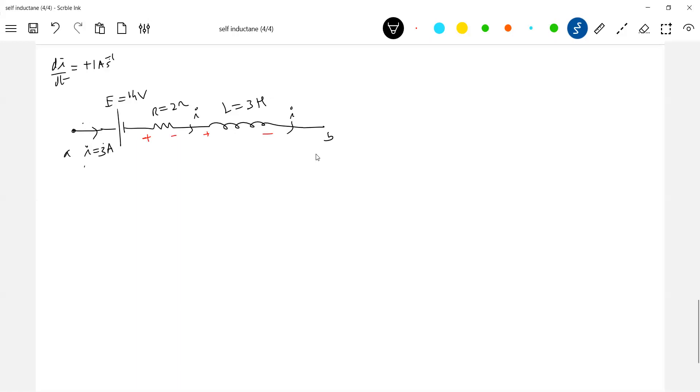What about induced current? It will be there flowing towards left. We are not bothered. The magnitude will be less, but it will try to oppose. What we are showing is the resultant current. Let me write the loop equation.